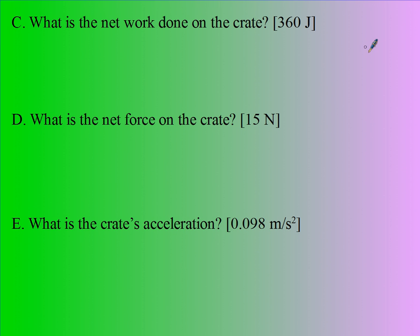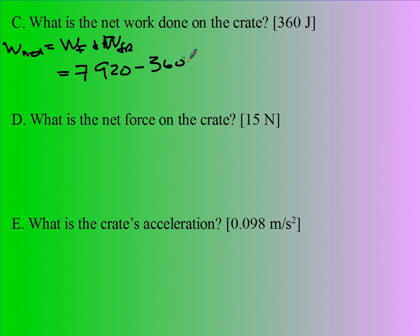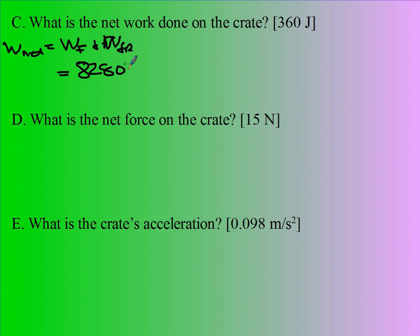What is the net work done on the crate? The net work is the work done by the applied force plus the work done by friction. The work done by the applied force is 8,280 joules, and the work done by friction is negative 7,920 joules. So the net work is approximately 360 joules.